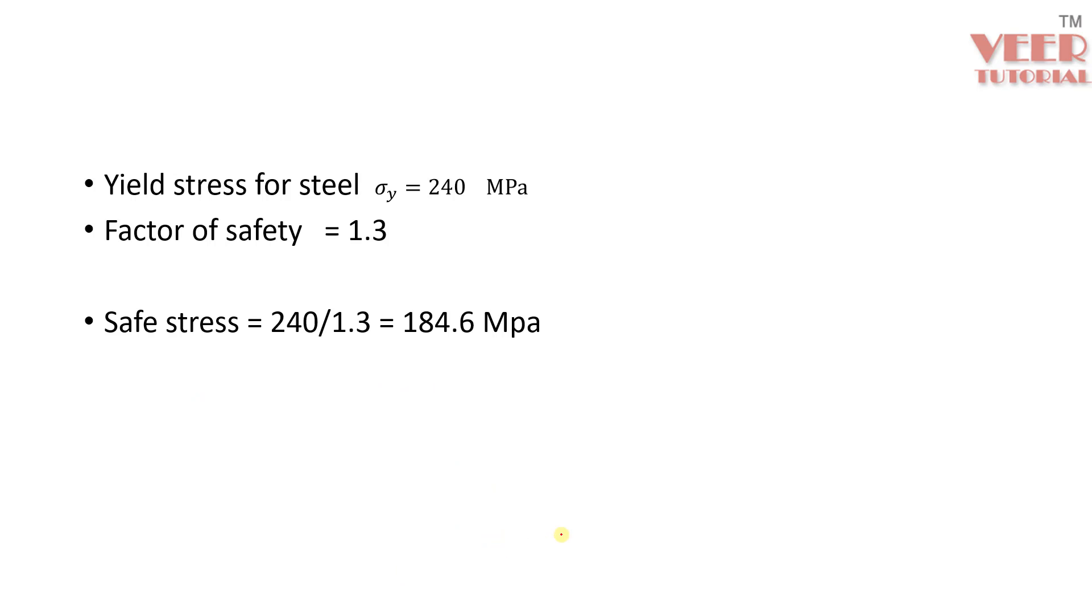Also we want to check whether this part will break or not. So here, for the steel, the yield stress is 240 MPa. So yield stress is basically the limit of the stress, after which the part will break. So generally in automotive industries, we consider a factor of safety somewhere close to 1.3.